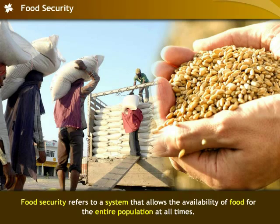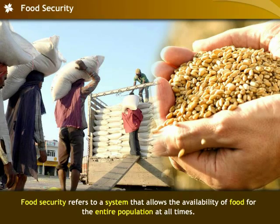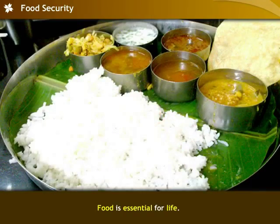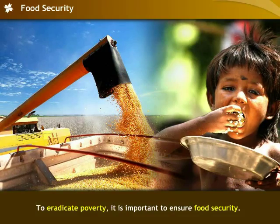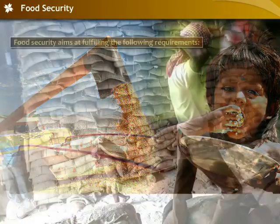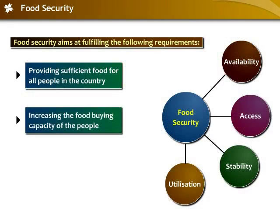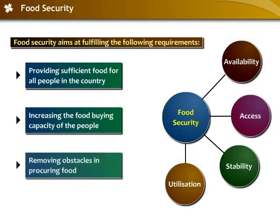Food security refers to a system that allows the availability of food for the entire population at all times. Food is essential for life, and to eradicate poverty, it is important to ensure food security. Food security aims at providing sufficient food for all people in the country, increasing the food-buying capacity of the people, and removing obstacles in procuring food.